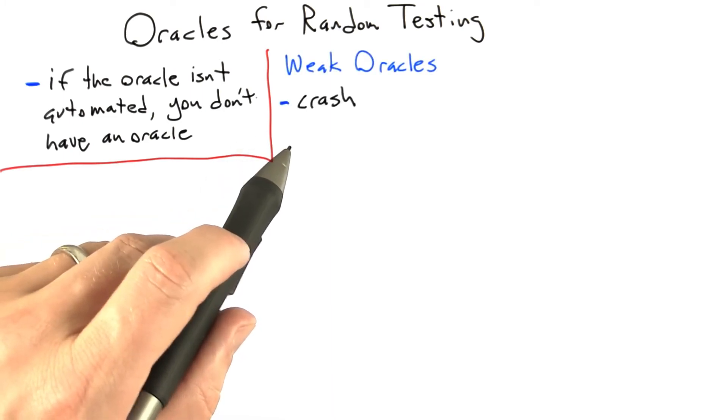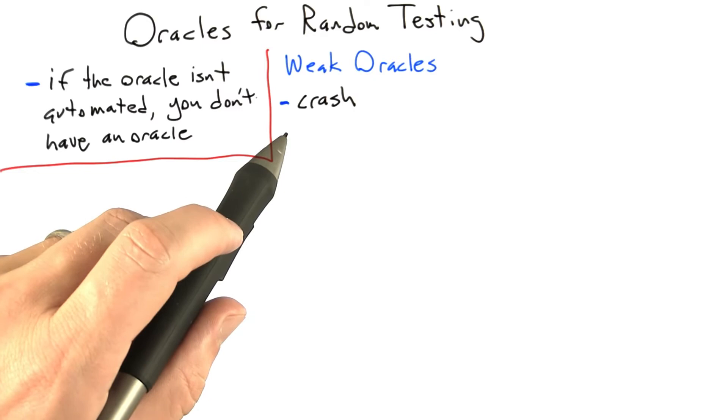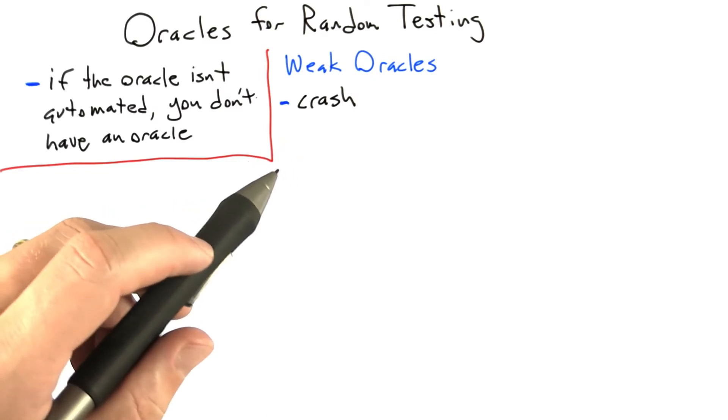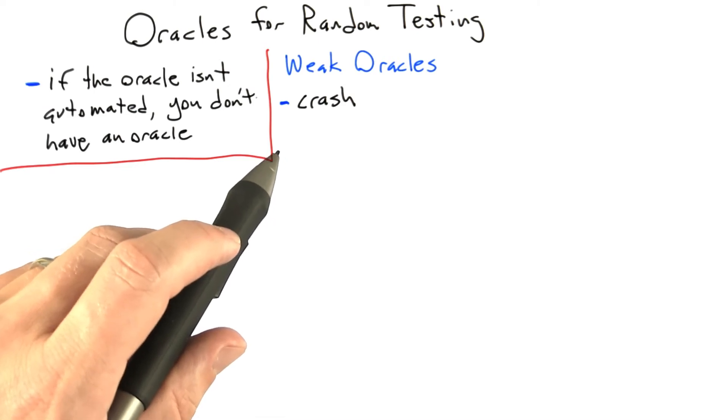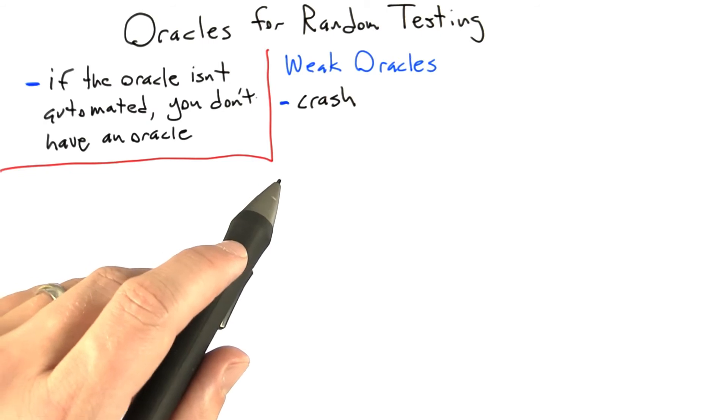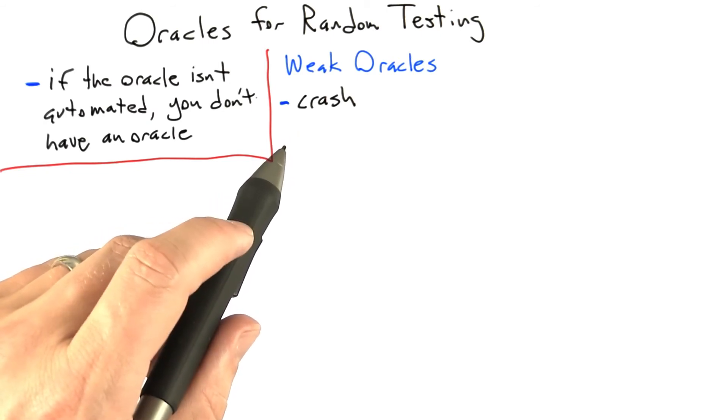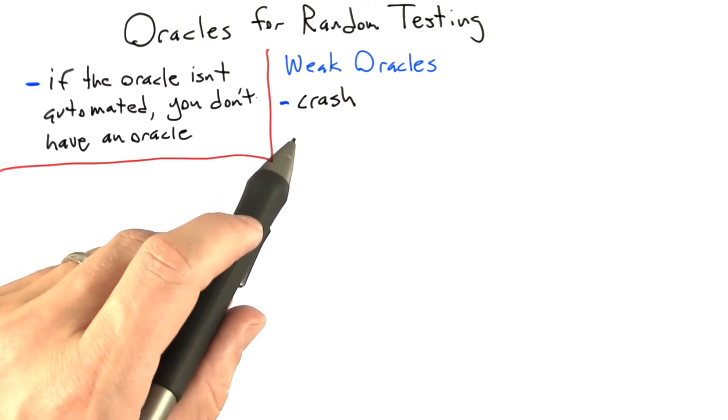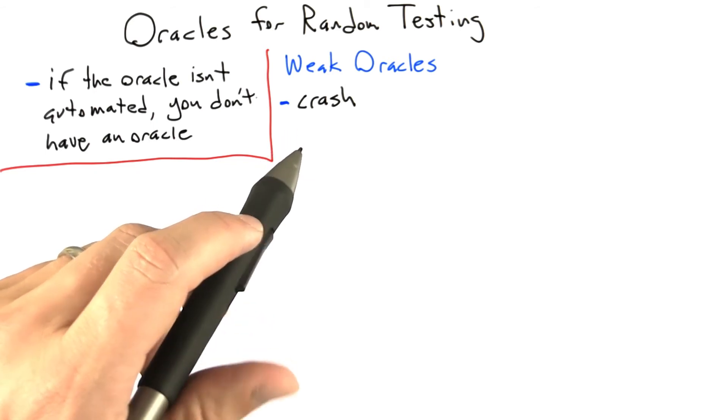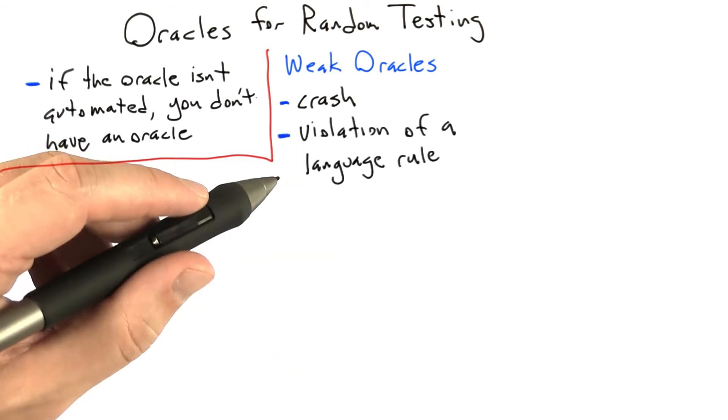So the most important weak oracle is just detecting whether or not the application crashed. What a crash usually means is that the system under test violated some rule that the hardware imposed—like for example, memory accesses have to be aligned—or that the operating system imposed—like for example, the application isn't allowed to try to write to memory that's owned by the kernel. And in response to this violation, the operating system has decided to terminate the process in which the software under test is contained.